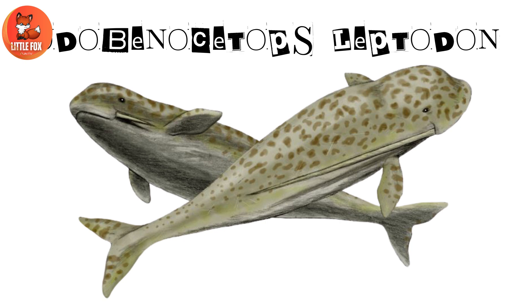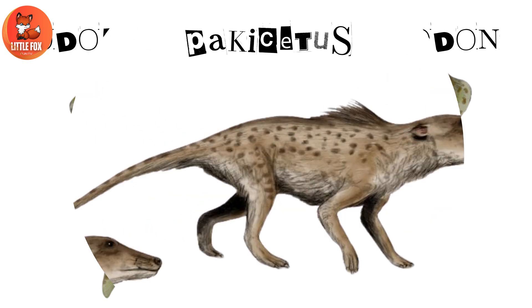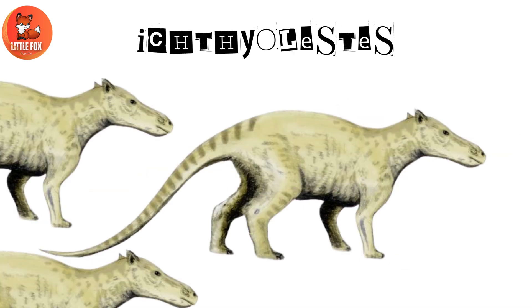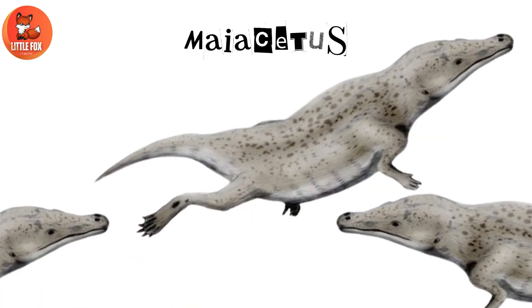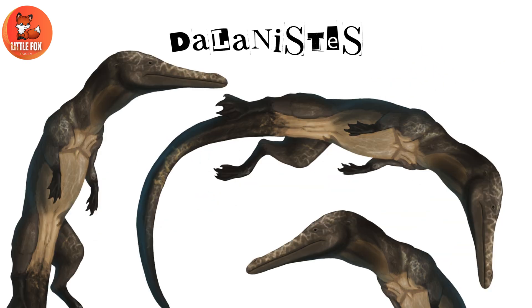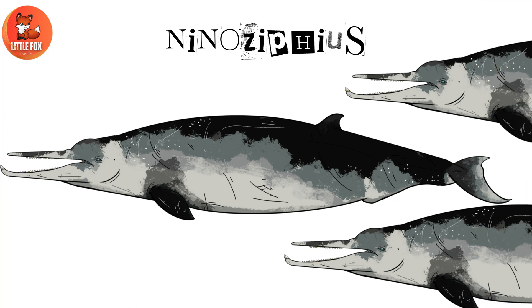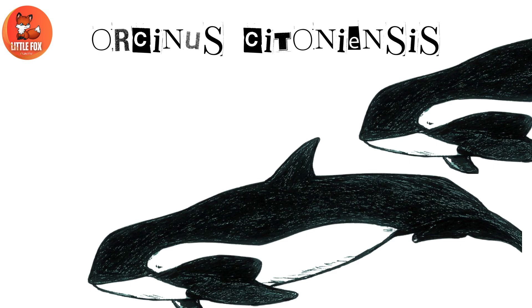Number thirty-nine: Otobinocetops Leptotin. Number forty: Otobinocetops Leptotin. Number forty-one: Pachycetus. Number forty-two: Ichthyolists. Number forty-three: Myocetus. Number forty-four: Dolinists. Number forty-five: Perigocetus. Number forty-six: Ninozippias. Number forty-seven: Or Sinis Satanensis.